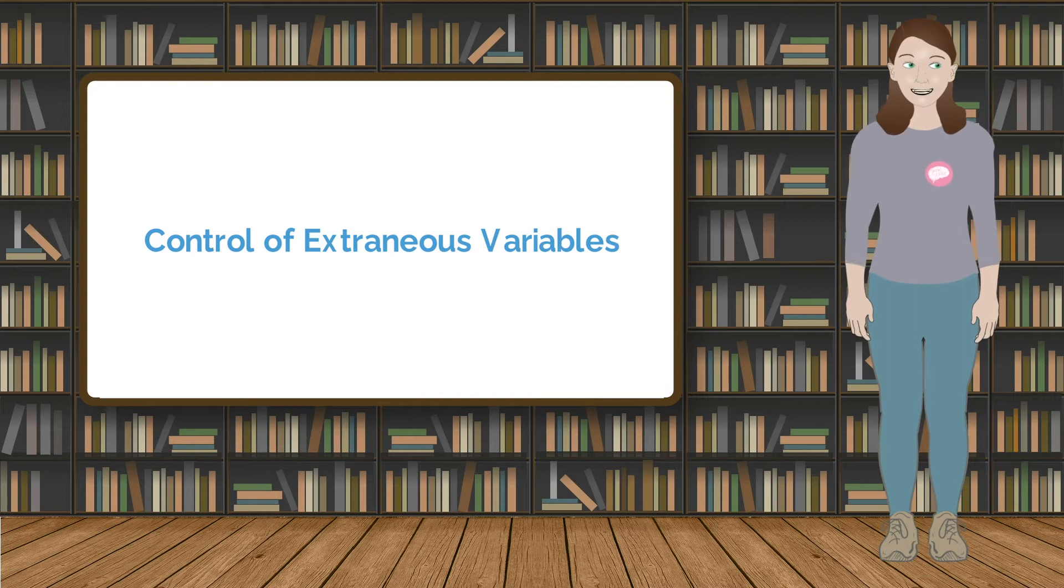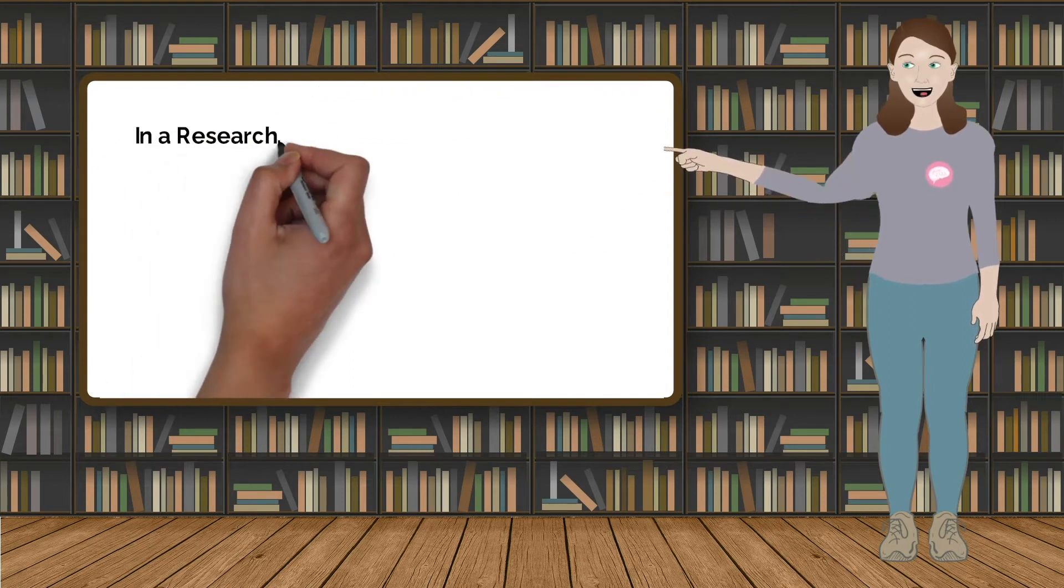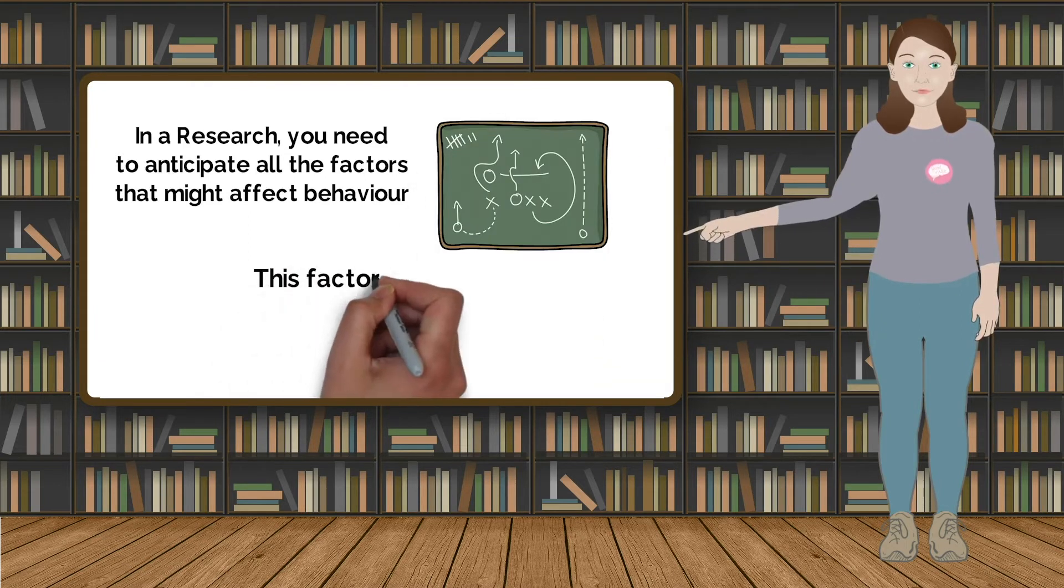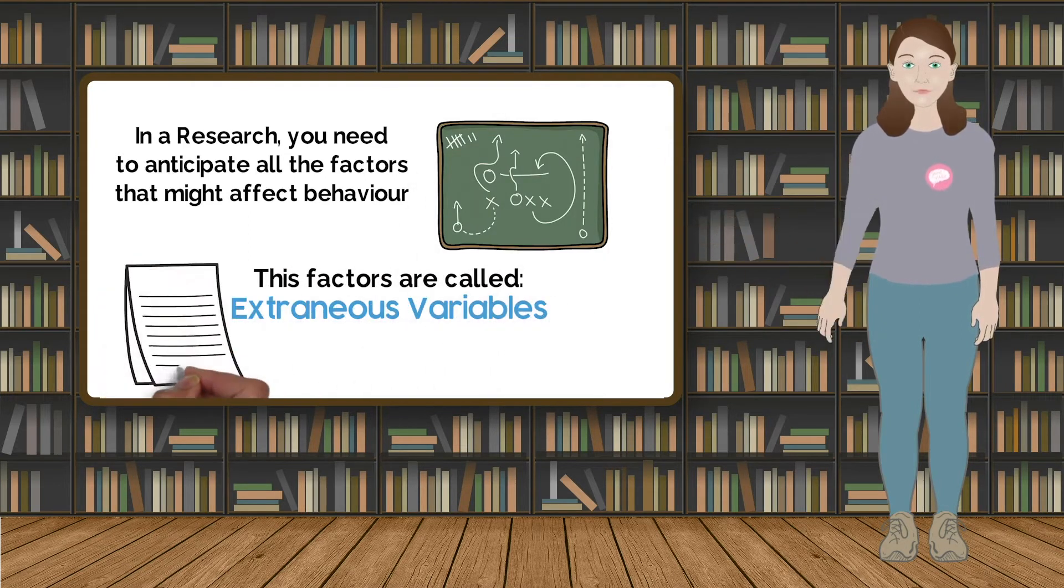When research is planned, it's important to anticipate all the factors that might affect the behaviour under scrutiny, but which are not the focus of the research. The term for these factors is extraneous variables.